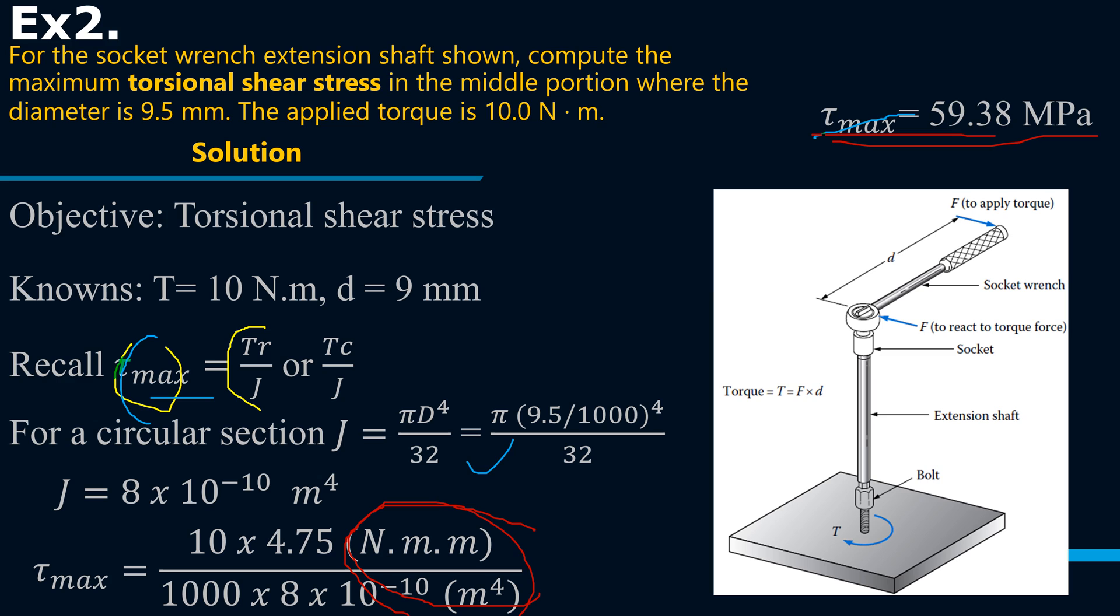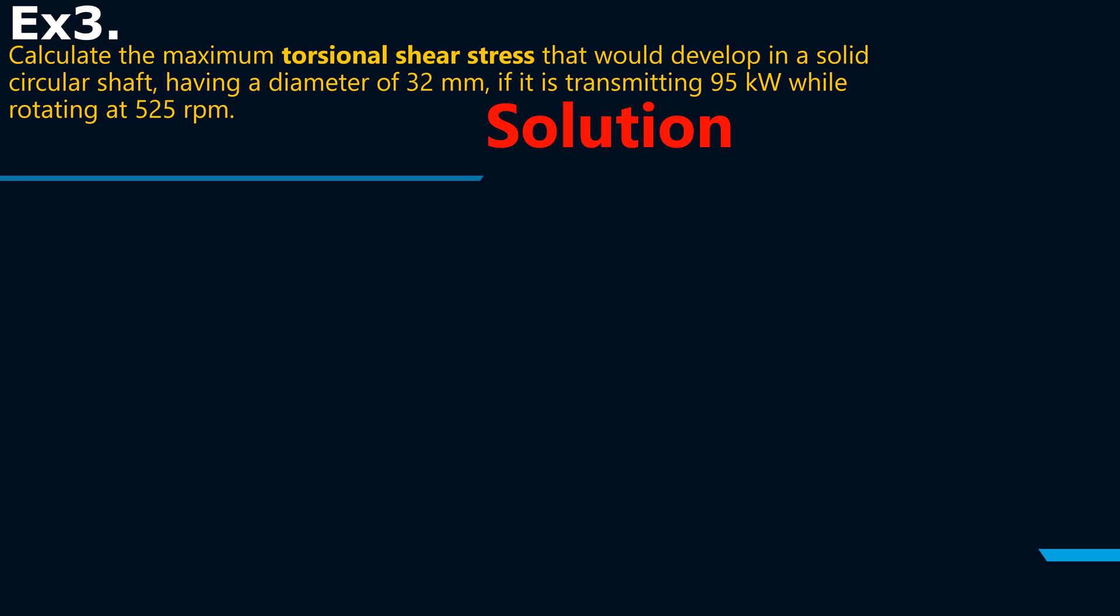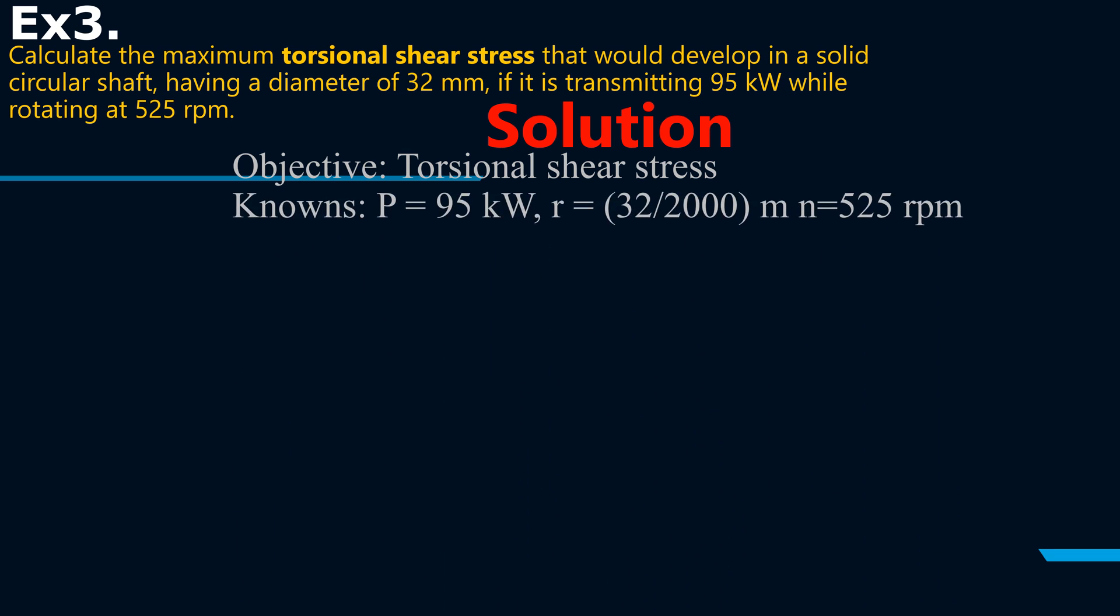And then finally, calculate the maximum torsional shear stress that would develop in a solid circular shaft having a diameter of 32 millimeters if it is transmitting 95 kilowatts while rotating at 525 rotations per minute. So the solution for this: the objective is to calculate torsional shear stress. Here we go a little bit into the detail, now we're talking about power.